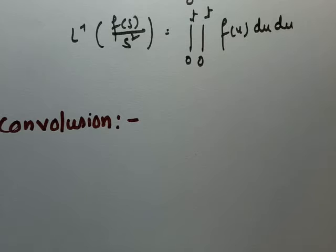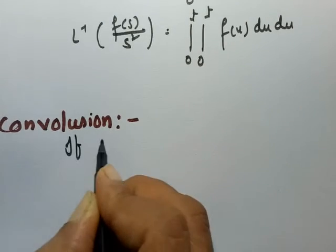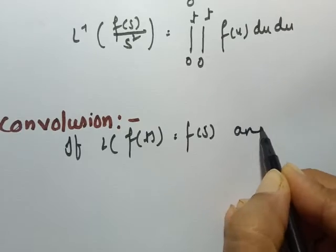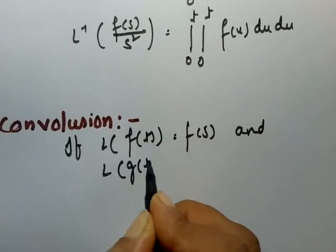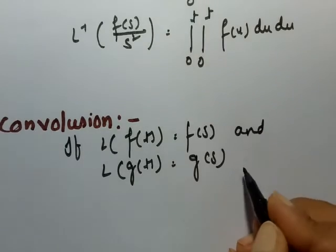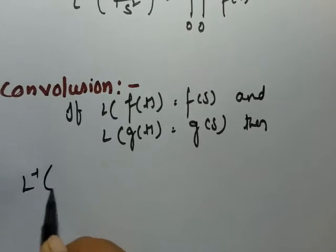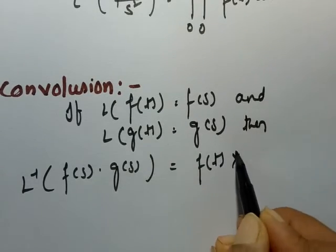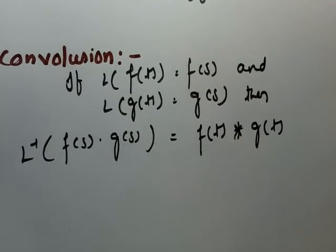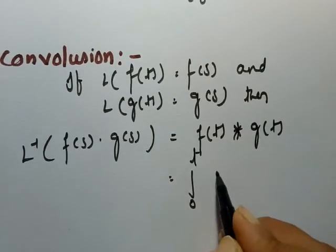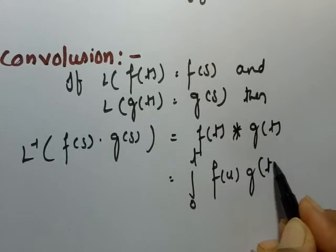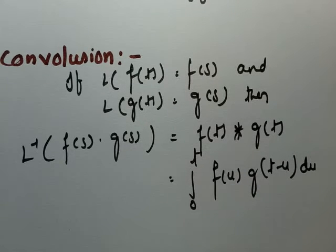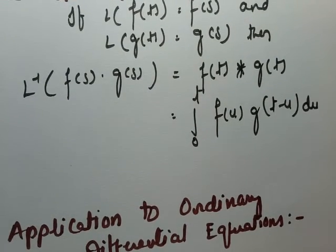The next one is convolution. If the Laplace transform of f(t) is F(s) and the Laplace transform of g(t) is G(s), then the convolution product: inverse Laplace transform of F(s) · G(s) can be written as f(t) * g(t). The formula is the integral from 0 to t of f(u) · g(t minus u) du. There are many videos related to each formula, so go through my previous videos.